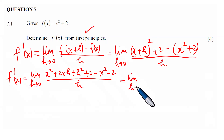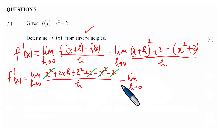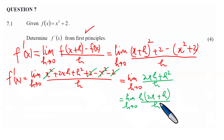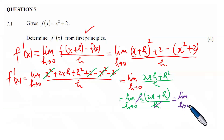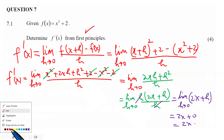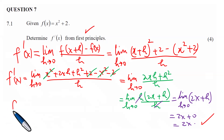This becomes the limit as h tends to zero. The +2 and −2 cancel, leaving us with 2xh + h² all over h. We factor out h: the limit as h tends to zero of h(2x + h) over h. H divides, giving the limit as h tends to zero of 2x + h. As h tends to zero, this becomes 2x + 0, giving us 2x. Therefore, f'(x) = 2x.